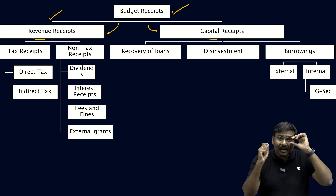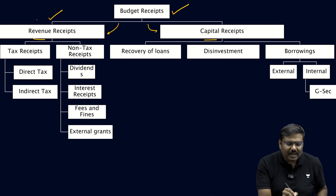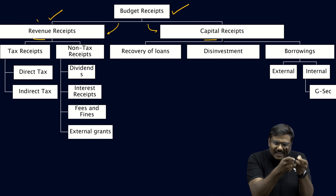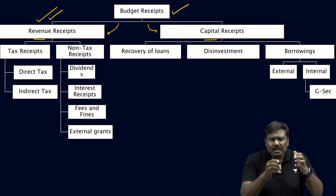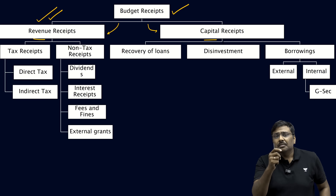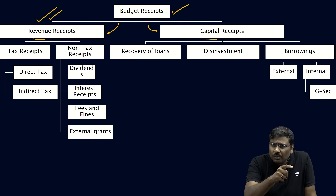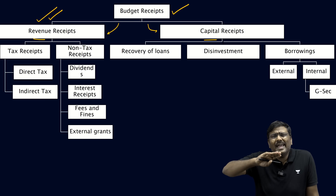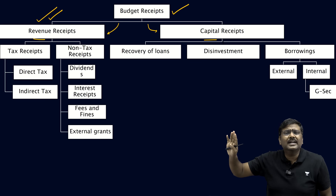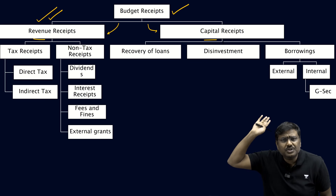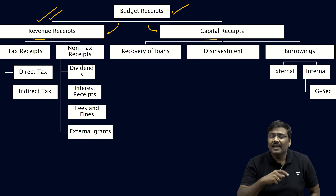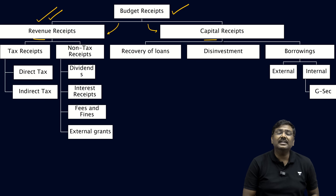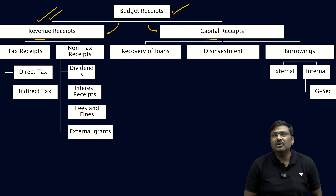The basic difference between revenue and capital receipts is simple. In case of revenue receipts, the government collects money, but this collection does not generate any liabilities for the government. This money collected today does not lead to any future liability — government will collect income tax or GST from you and will not return it.